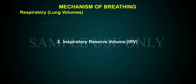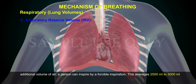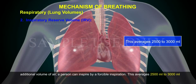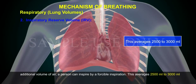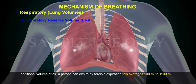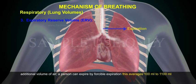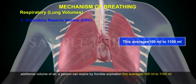2. Inspiratory reserve volume (IRV): Additional volume of air a person can inspire by a forcible inspiration. This averages 2,500 ml to 3,000 ml. 3. Expiratory reserve volume (ERV): Additional volume of air a person can expire by a forcible expiration. This averages 1,000 ml to 1,100 ml.